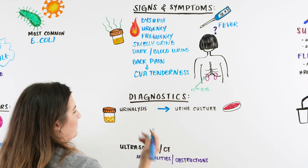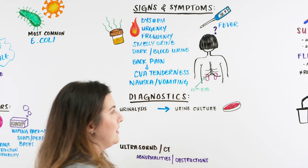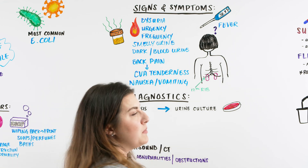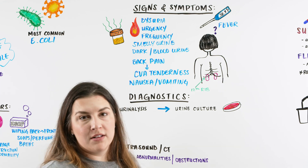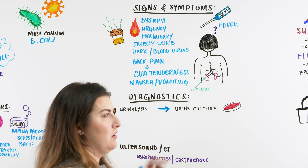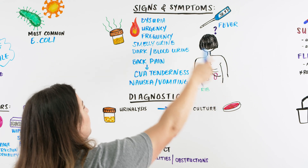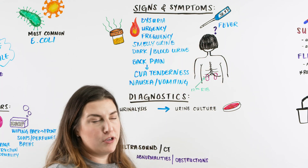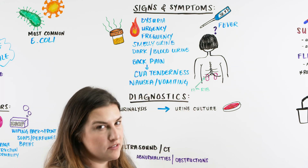The patient may also complain of nausea and vomiting. In older, geriatric patients, a UTI may present with confusion or new-onset incontinence — meaning they can no longer make it to the bathroom before they urinate. Those two symptoms together can be how a UTI presents in the geriatric population, although any patient of any age or gender can have any of these symptoms.